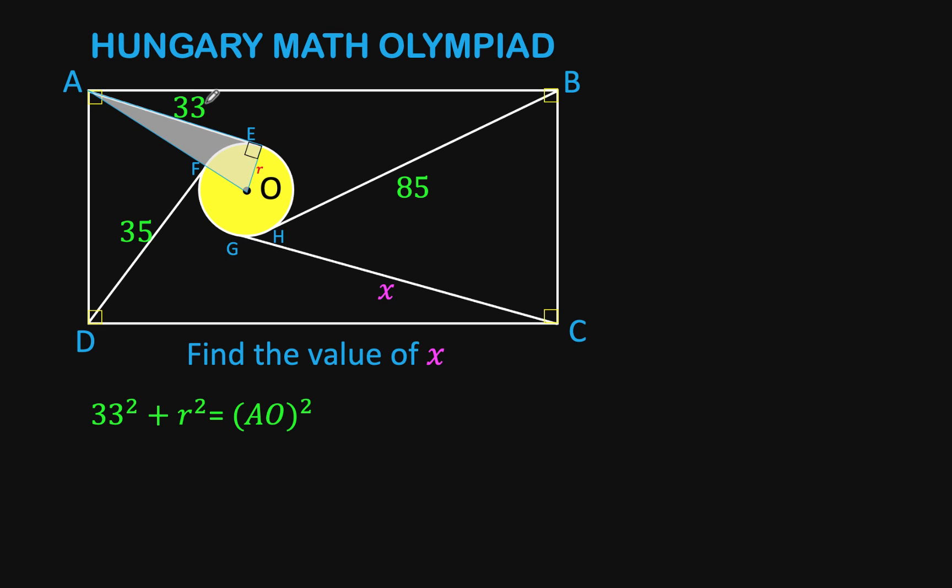The square of the sum of the two legs with a measure of 33 and R is equal to the square of the hypotenuse AO. Similarly, we can draw this other right triangle. And from Pythagorean formula again, we have 35 squared plus R squared equals the square of side DO.